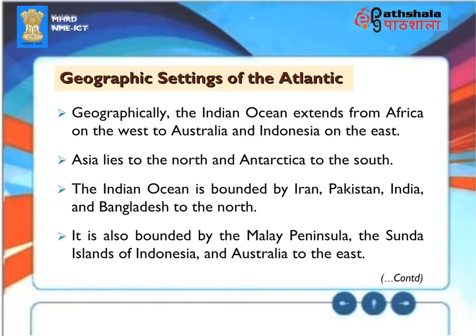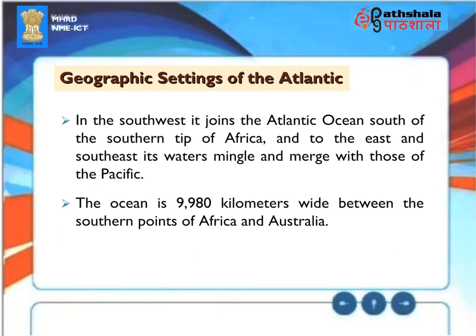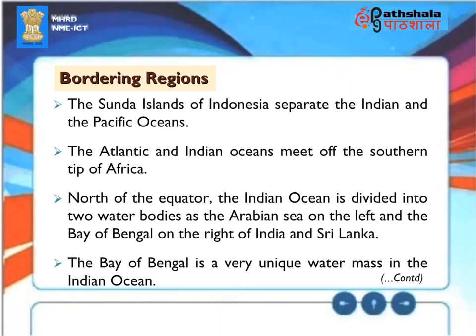Geographic setting of the Indian Ocean. Geographically, the Indian Ocean extends from Africa on the west to Australia and Indonesia on the east. Asia lies to the north and Antarctica to the south. The Indian Ocean is bounded by Iran, Pakistan, India and Bangladesh to the north. It is also bounded by the Malay Peninsula, the Sunda Islands of Indonesia and Australia to the east. In the southwest, it joins the Atlantic Ocean south of the southern tip of Africa, and to the east and southeast, its waters mingle and merge with those of the Pacific. The ocean is 9,980 kilometers wide between the southern points of Africa and Australia.